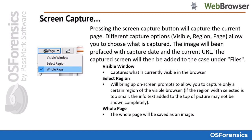One way of capturing web data is with the screen capture utility. By pressing the screen capture button, you will be able to capture the current page. Different capture options — visible window, select region, or the whole page — will allow you to choose what is captured. The image will be prefaced with the capture date and current URL. This captured screen will then be added to your case under the file section in the manage case module.